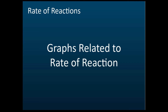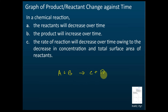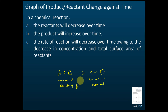Today we look at graphs related to rate of reactions. First, we need to know how the products or reactants change against time. In chemical reactions, the reactants decrease over time. For example, in the reaction A + B → C + D, A and B are the reactants and C and D are the products. As the reaction proceeds, the amounts of A and B reduce while the amounts of C and D increase.